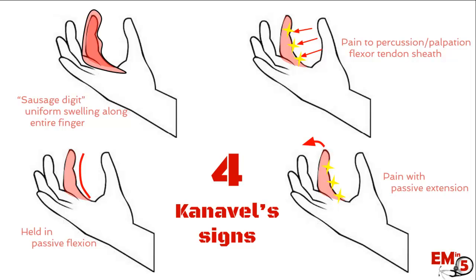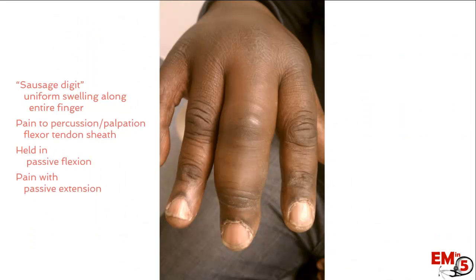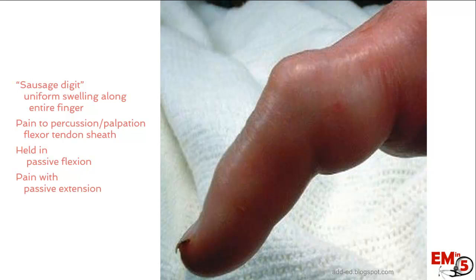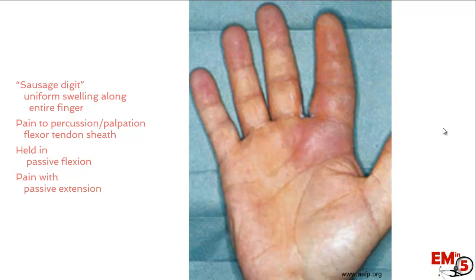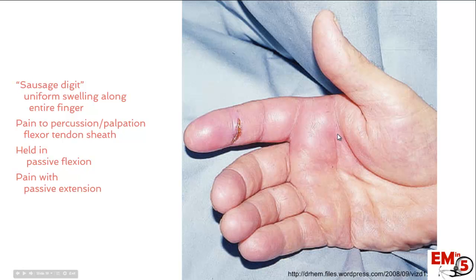Here are a couple of pictures. Here's a great example of that sausage digit — the uniform swelling along the entire finger — and you can also see it's held in flexion. Here's another great example of that swelling held in flexion. This picture shows how far down it goes: it starts in the finger and extends through the flexor tendon sheath all the way down into the palmar crease. And there's the last one — held in flexion, diffuse swelling. On exam, palpate along the flexor surface and try to extend it to check for that pain.